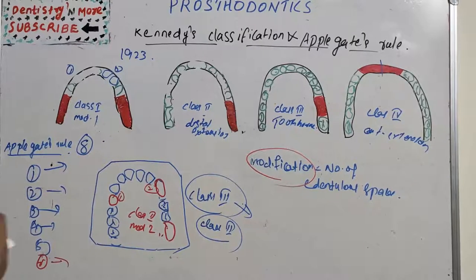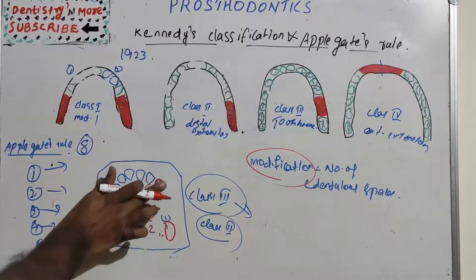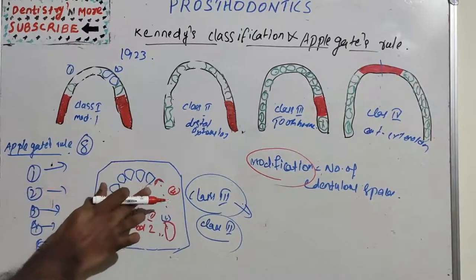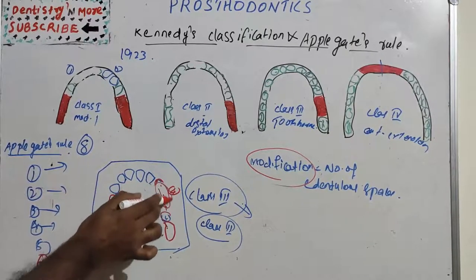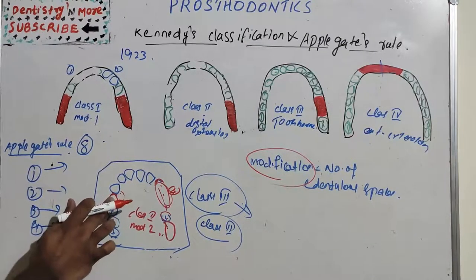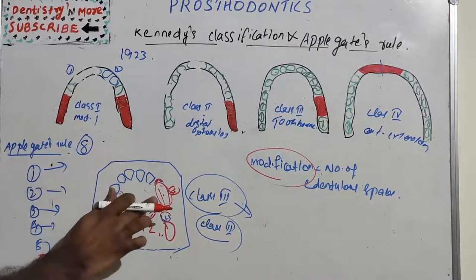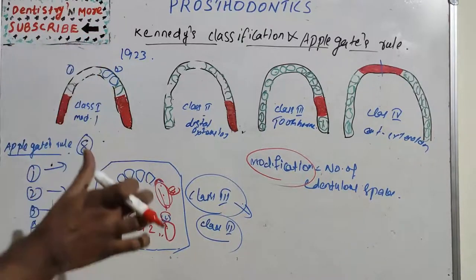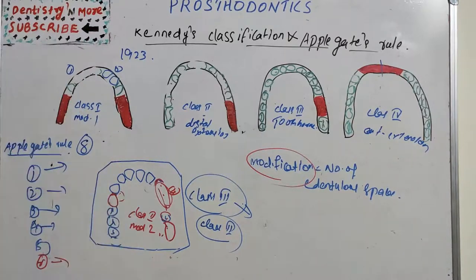Rule number 7: the extent of modification is not considered — only the number of edentulous areas. Whether 4 teeth or just 1 tooth is missing in a space, it is still counted as one edentulous space. It is not the number of missing teeth but the number of spaces that matters.